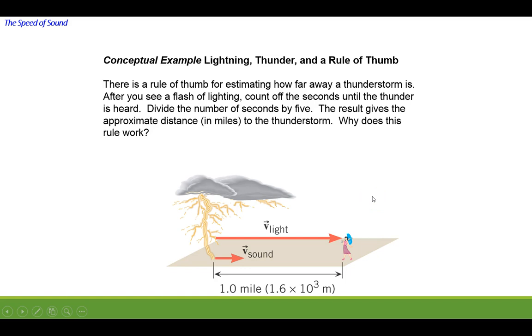So if you see a lightning strike and you count to five before you hear the thunder, the lightning hit about one mile away. If you're able to count to 10, it's two miles away.